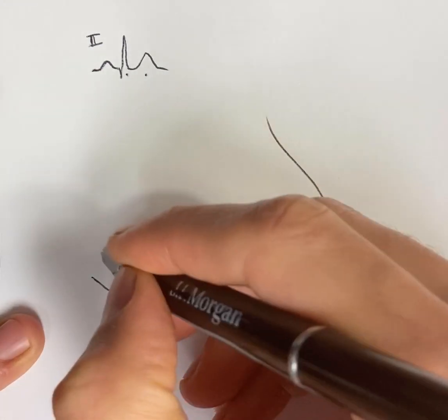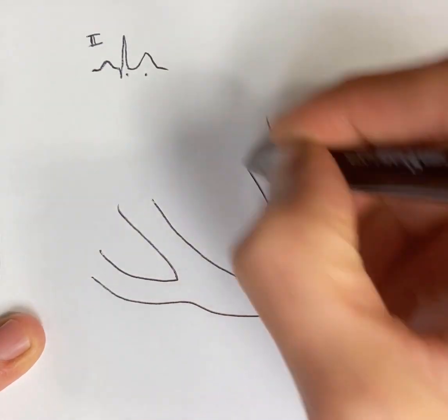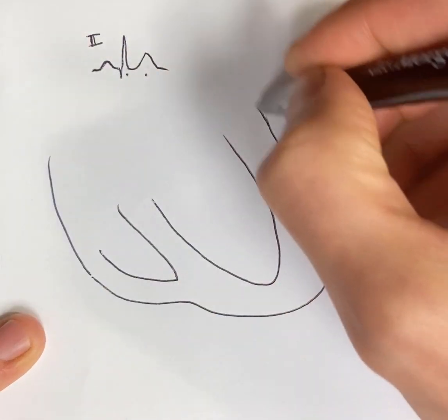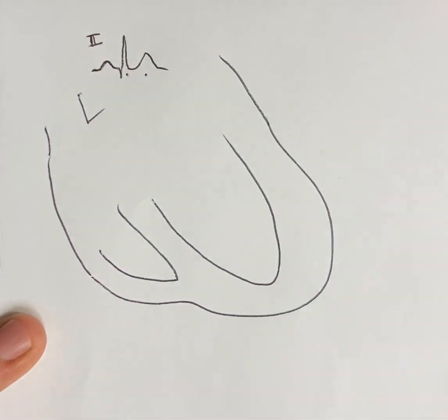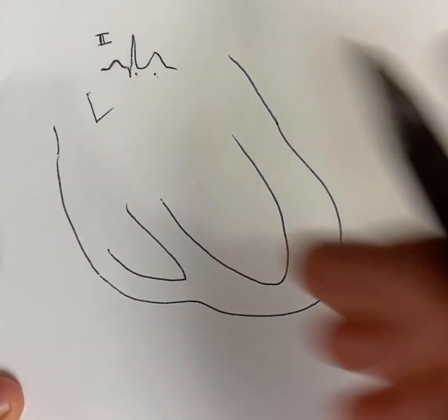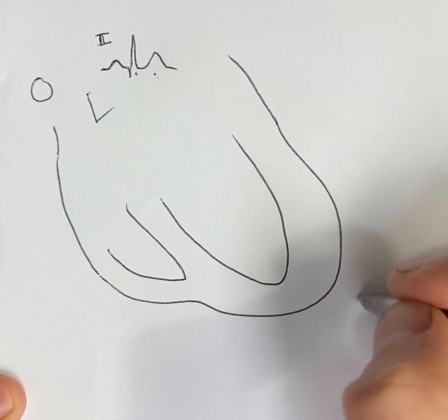So here's a heart, and before we talk about what goes on inside of it, let's remember how we even get these squigglies on the paper, which is that we stick these electrodes on the chest.